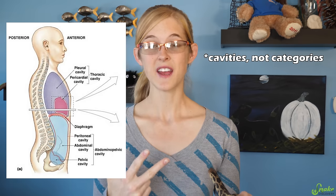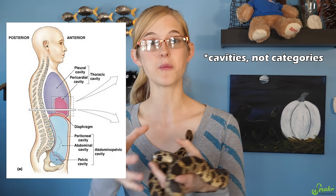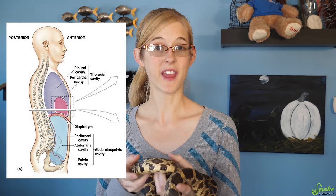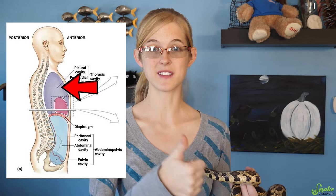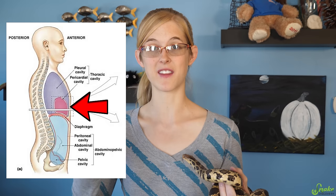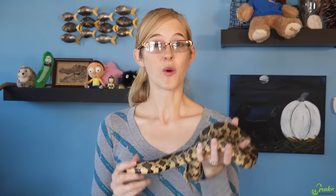In mammals the coelum is divided into three categories, each protecting an organ or a group of organs. The cavities protect the thorax, the heart, and the abdomen in mammals. Reptiles on the other hand have just a single coelum cavity.